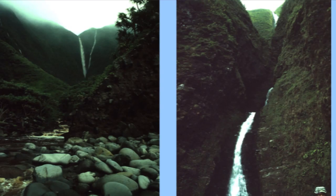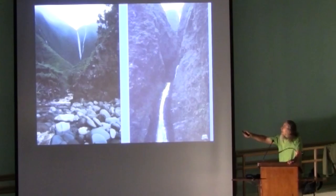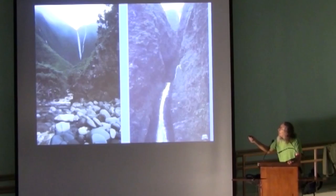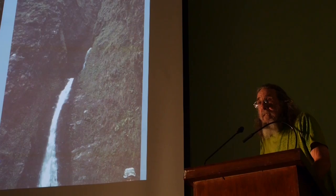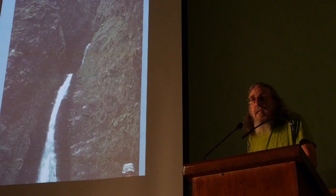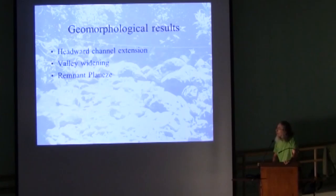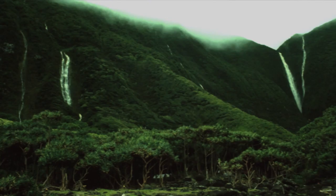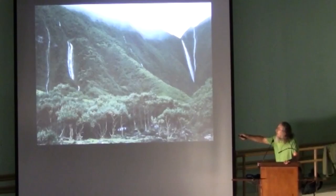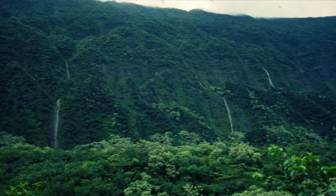I talked about the headward cutting feature of streams — that is, cutting towards the center of the island. This is actually the same stream, but this is mauka where most of the rainfall is. It falls down and the stream is cutting into the side of the mountain, cutting deeper and deeper, making the river valley longer and longer as it cuts towards the center of the island. Headward cutting channel extension and valley widening — it's just the same thing happening on the sides of the valley as well.